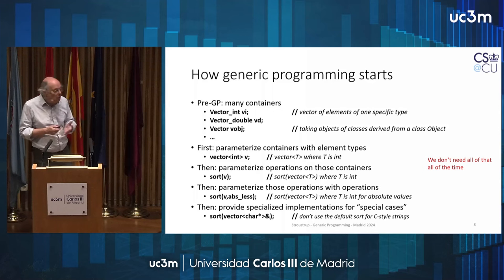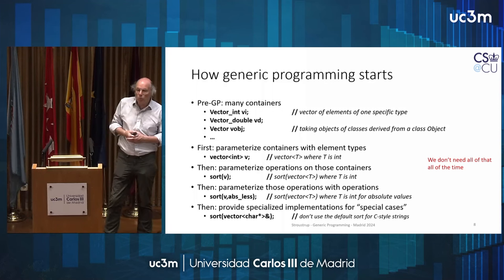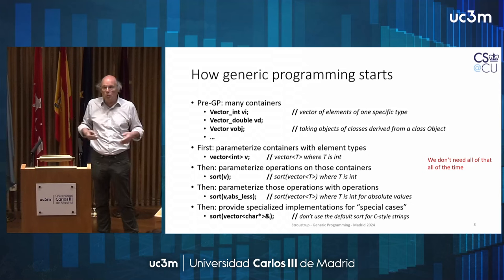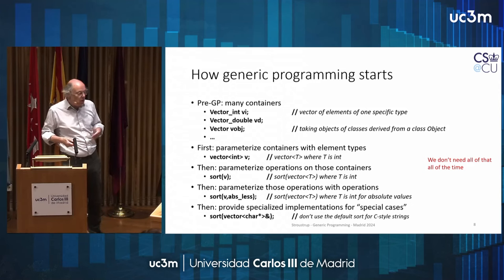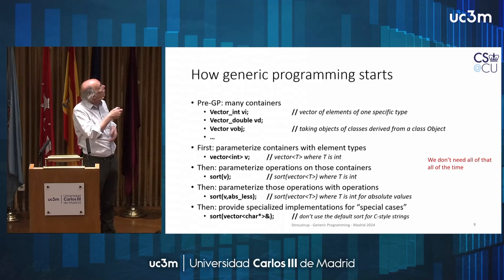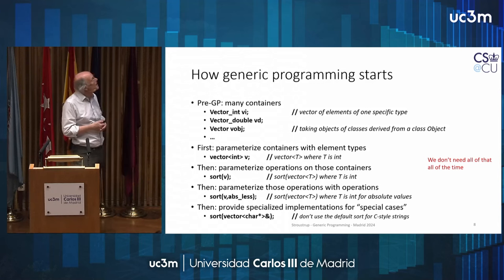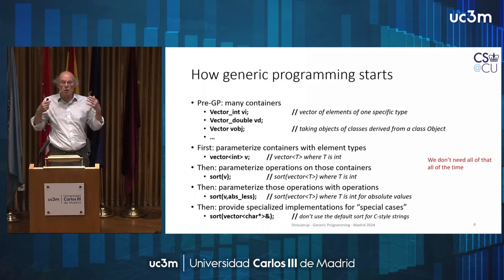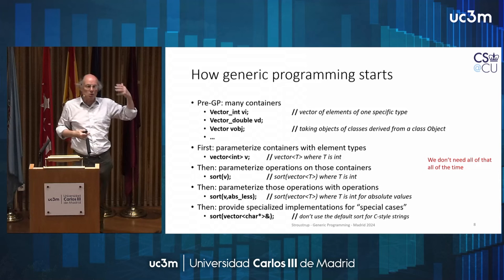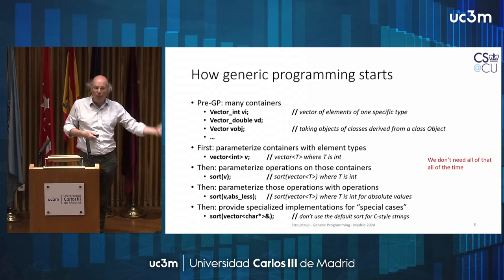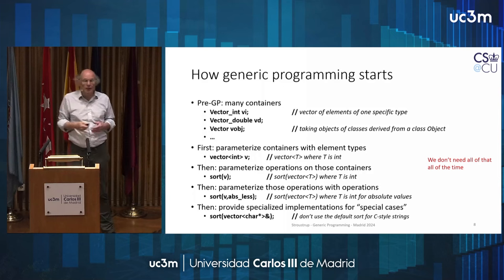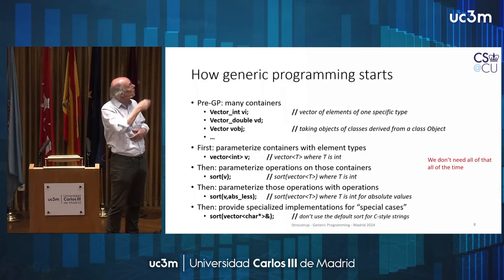So let's get to generic programming. Here is how it all starts: people want a data structure — a vector of integers — and they want operations on it, maybe range checking, maybe special operations. Then they want one of doubles, and they realize the code is very similar. Then they want a vector of objects. And you realize you need to parameterize — you have a concept of a vector, you have individual types, and you want to merge them together so that vector is an independent thing in the code. Once you've got the containers, you parameterize the containers and the algorithms.